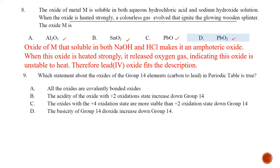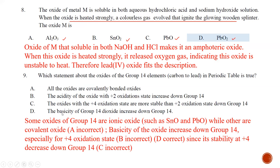Question number nine: which statement about the oxides of Group 14 elements from carbon in the periodic table is correct? Statement A — all oxides are covalently bonded — is wrong, as some are ionic, for example SnO, PbO, SnO2, and PbO2. Statement B — acidity of the oxide with plus two oxidation state increases — is wrong, as SnO and PbO are amphoteric. Statement C — oxides of plus four oxidation state are more stable than plus two going down Group 14 — is the other way around. Statement D — basicity of Group 14 dioxides increases down the group — is true, because CO2 and SiO2 are acidic while GeO2, SnO2, and PbO2 are amphoteric, meaning acidity decreases and basicity increases. The best answer is D.